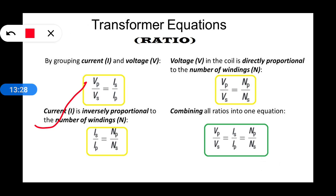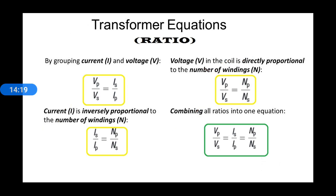That means primary voltage divided by secondary voltage equals primary winding divided by secondary winding. Current is inversely proportional, so combining all three gives the transformer ratio equation: VP divided by VS equals secondary current divided by primary current equals primary winding divided by secondary winding. This is the complete transformer ratio.